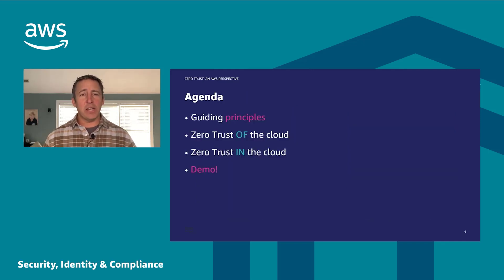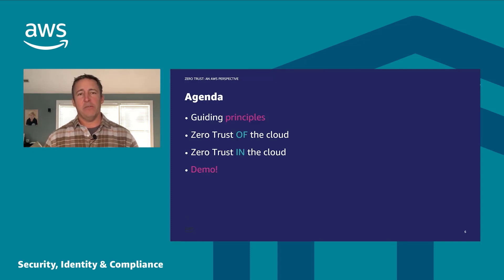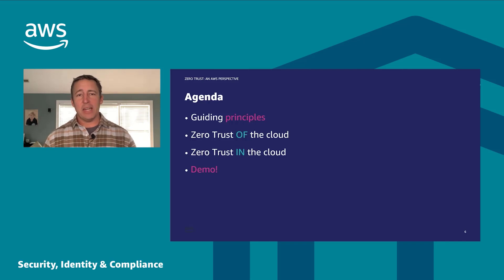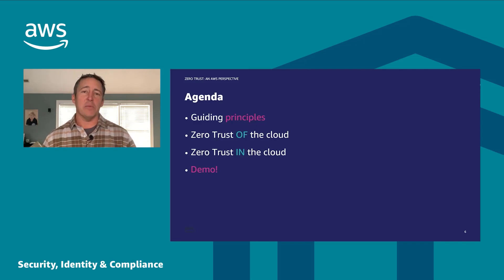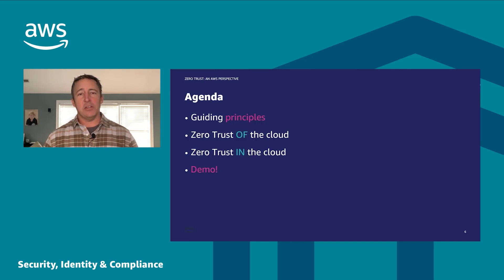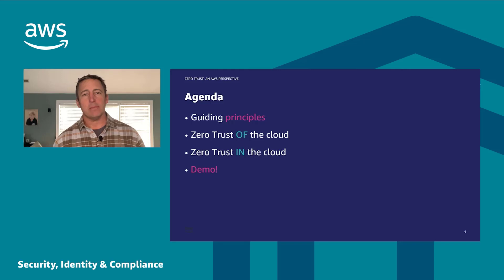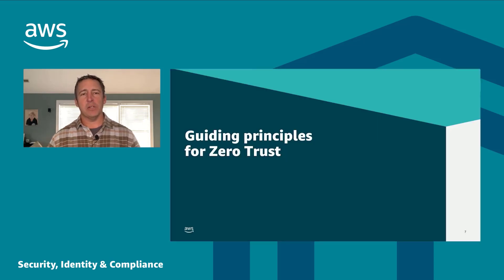Here's what we're going to cover today. We'll go through a few guiding principles — things we'd like to offer you in terms of how to think about Zero Trust. Then we'll descend into how AWS drinks our own champagne — how we subscribe to these principles ourselves as we deliver the AWS platform to you. That's the part of Zero Trust you simply acquire by using the platform. Then we'll talk about your side of the shared responsibility model, how to build Zero Trust-ready architectures in the cloud, and reinforce that with a demo.